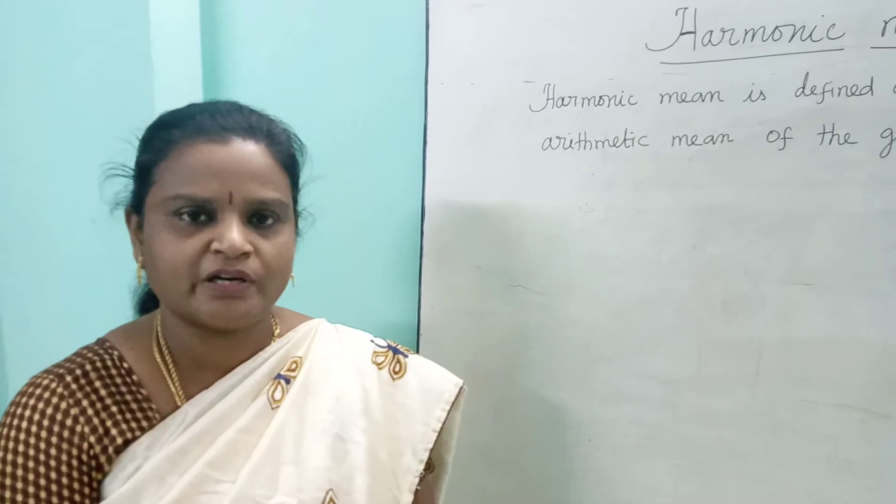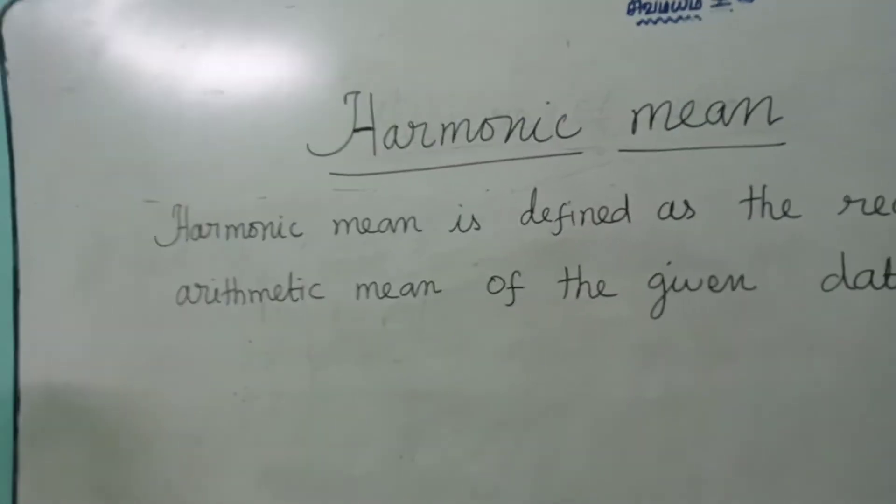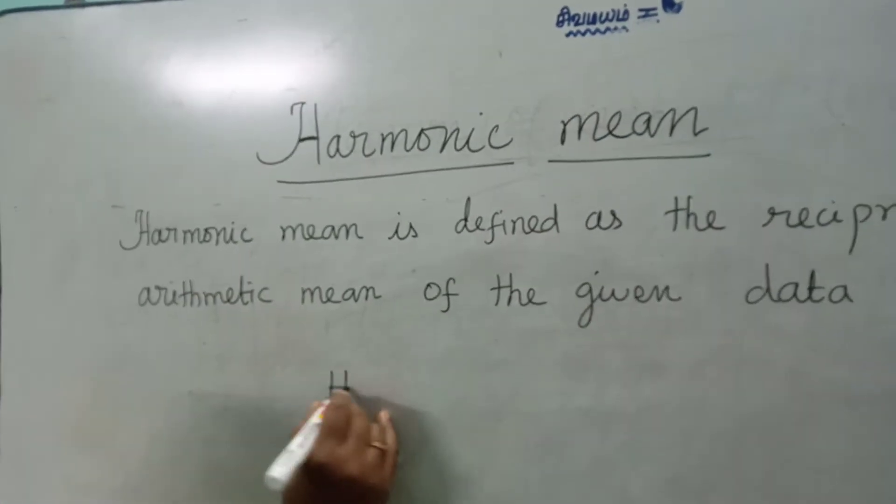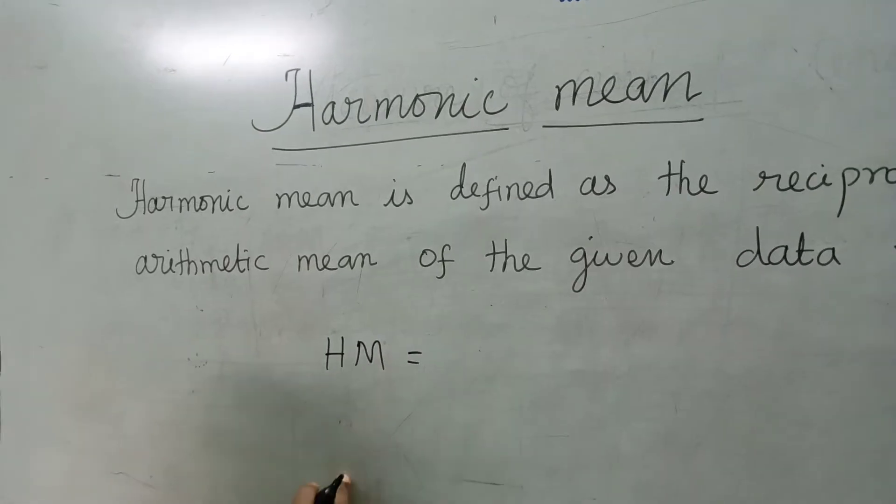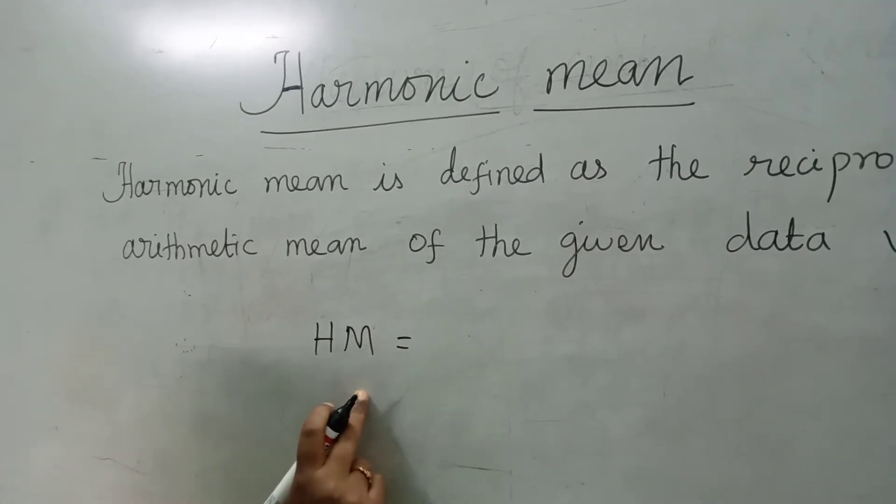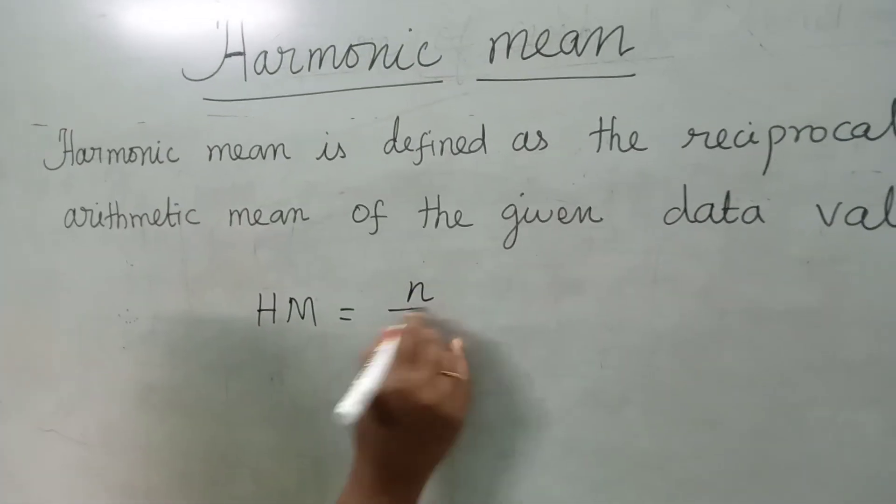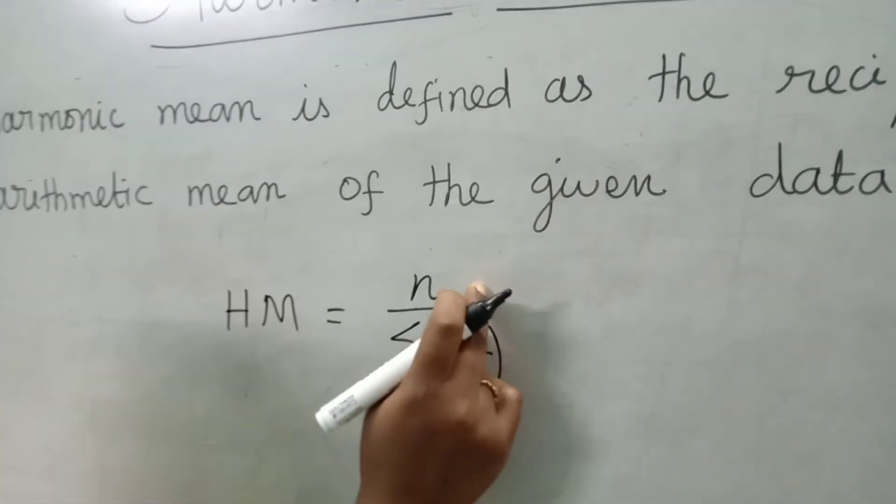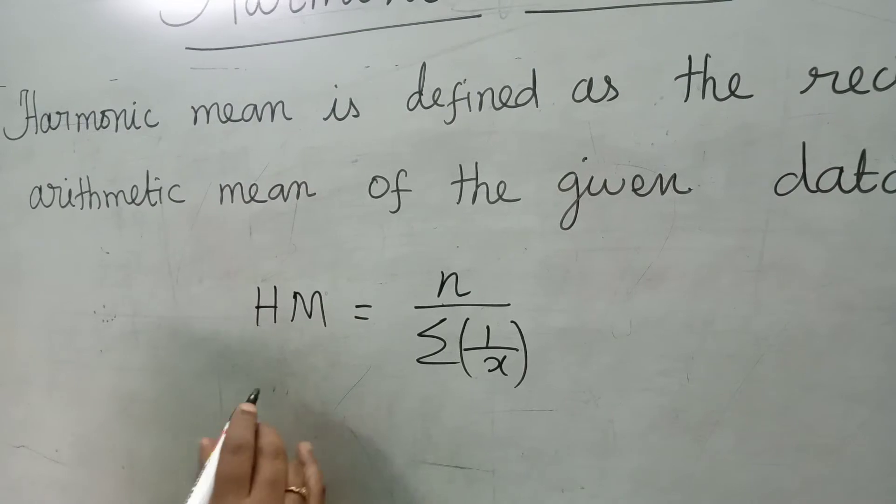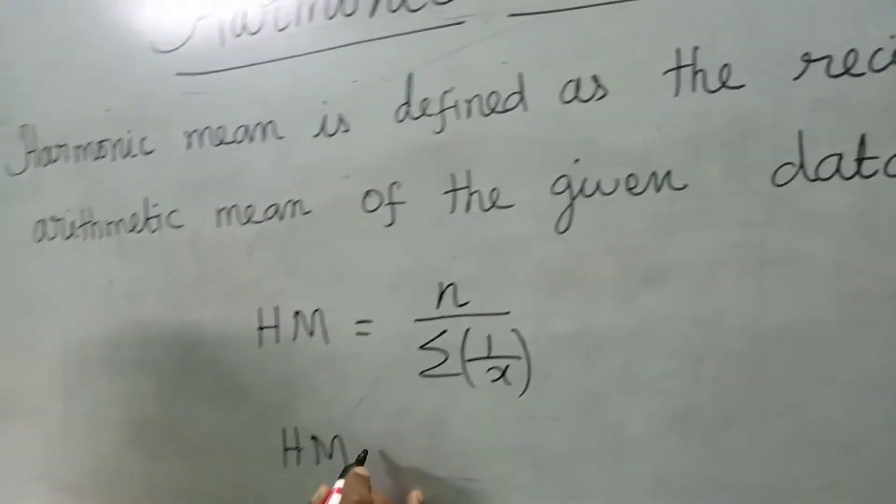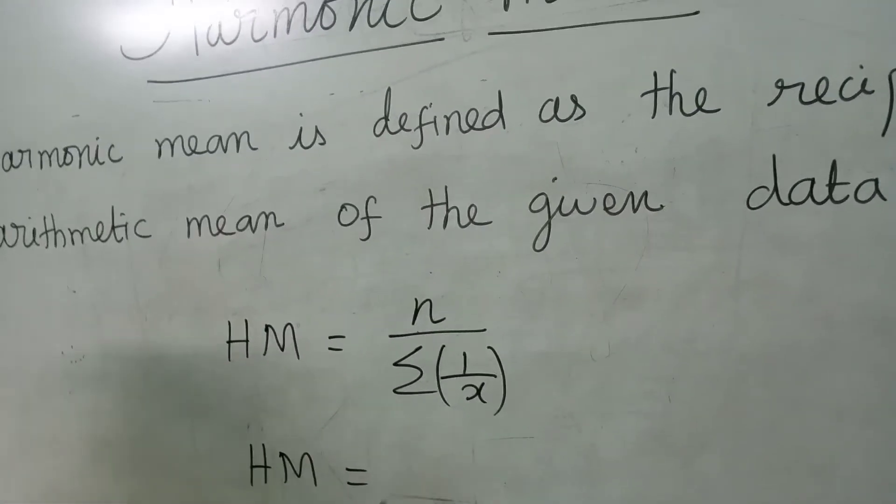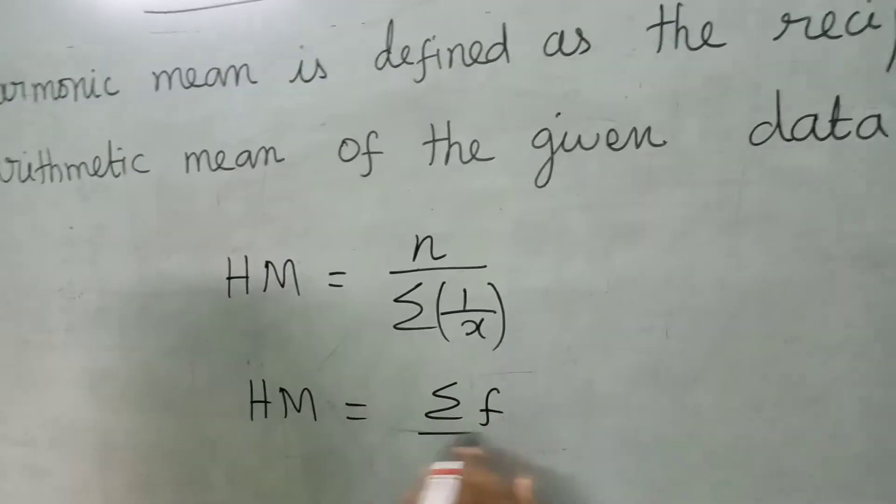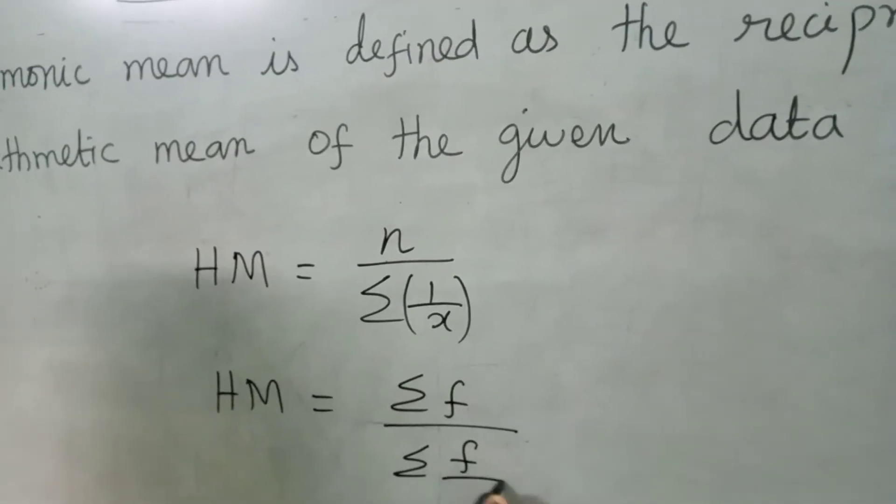We see the formula one by one. Harmonic mean is shortly known as HM. Now we see the formula for raw data. HM is equal to N divided by sigma 1 by X, where N stands for number of items in the data. Then harmonic mean for discrete and continuous data is sigma F divided by sigma F by X.